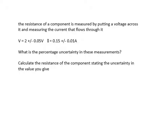Here's another example. The resistance of a component is measured by putting a voltage across it and measuring the current that flows through it. V = 2 +/- 0.05V, I = 0.15 +/- 0.01A. What's the percentage uncertainty in these measurements? Calculate the resistance of the component stating the uncertainty in the value you give. Very important - you can do this slide, have a go at it yourself.